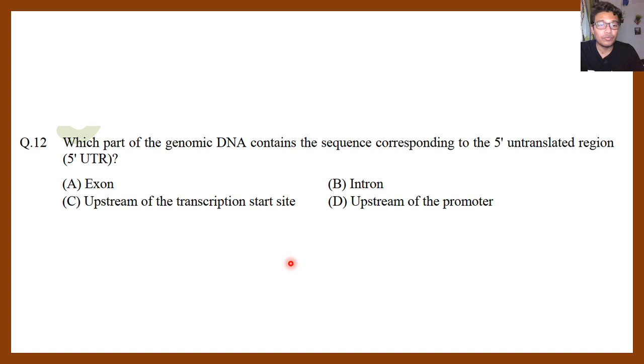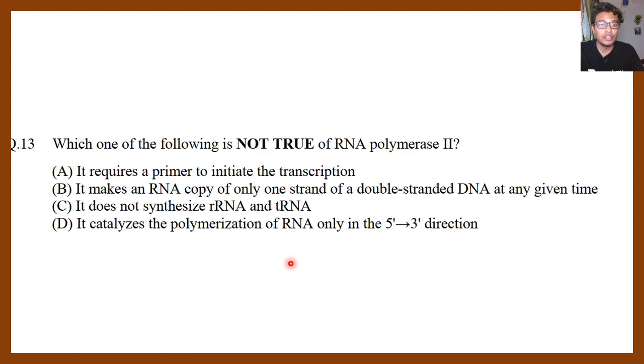2015: Which part of the genomic DNA contains a sequence corresponding to five prime untranslated region? Again, see they ask questions about miRNA, siRNA, UTRs, five prime untranslated region - all of these things. Want to learn more about five prime and three prime UTR? Click on the link given in the I button. Five prime UTR or three prime UTR - they are untranslated regions but they are part of the exon, so exon is the correct option here.